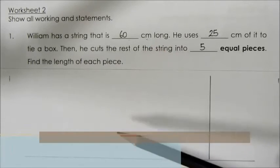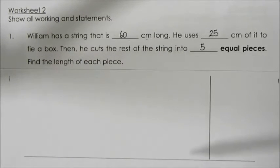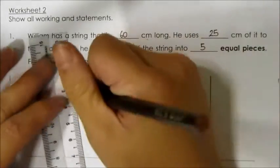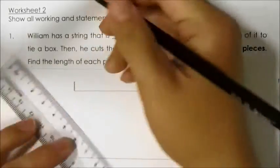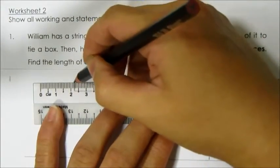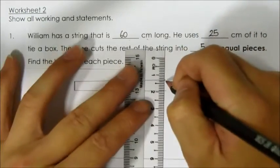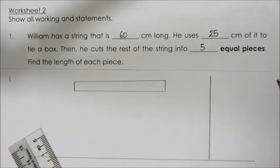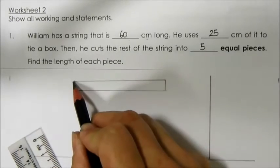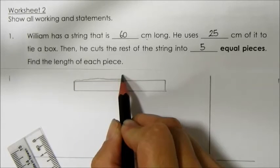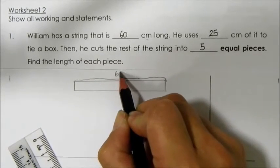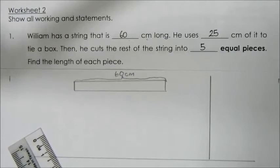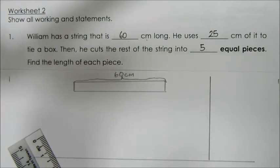So, I would draw a model that represents 60cm. This represents the 60cm that William has, and this represents the whole part of the model.